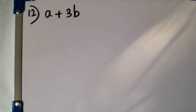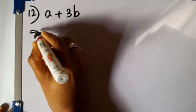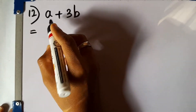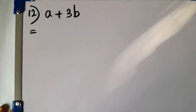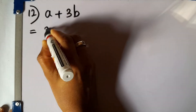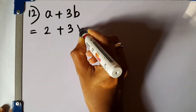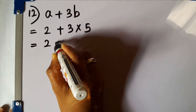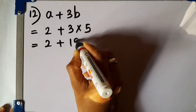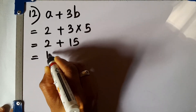Question number 12. Find the value of a plus 3b if a equals 2 and b equals 5. We substitute the given values: a equals 2 and b equals 5. So 2 plus 3 times 5 equals 2 plus 15. The answer will be 17.